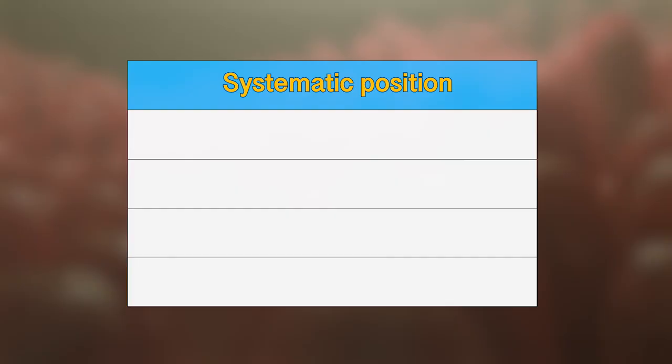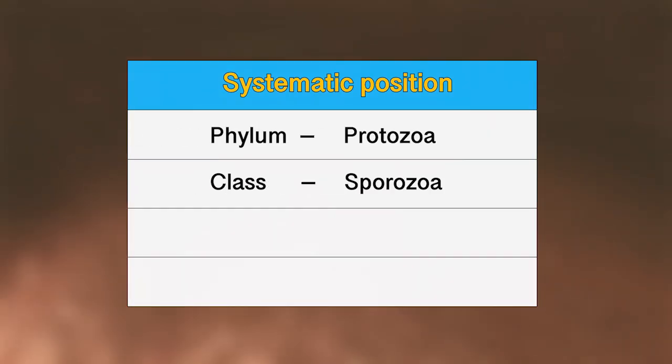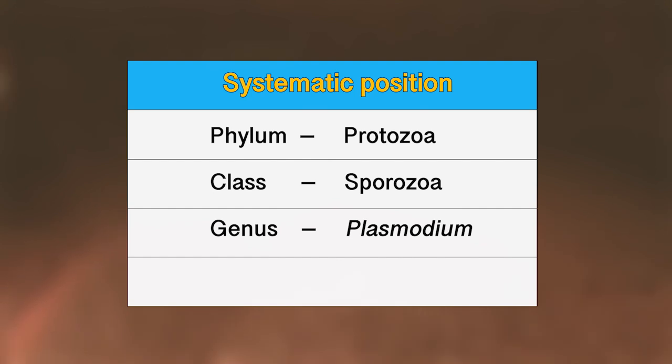The systematic position of Plasmodium vivax involves: Phylum Protozoa, Class Sporozoa, Genus Plasmodium, and Species vivax.